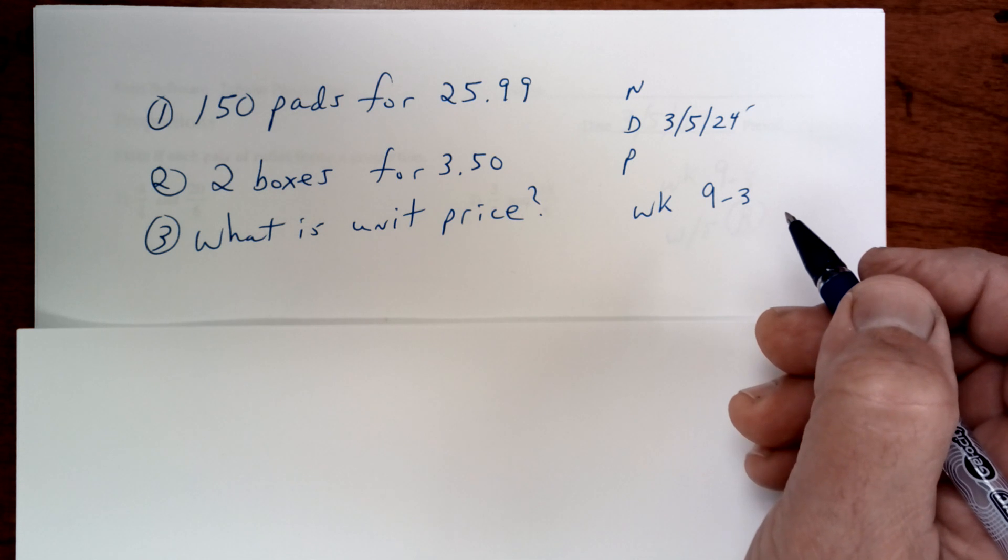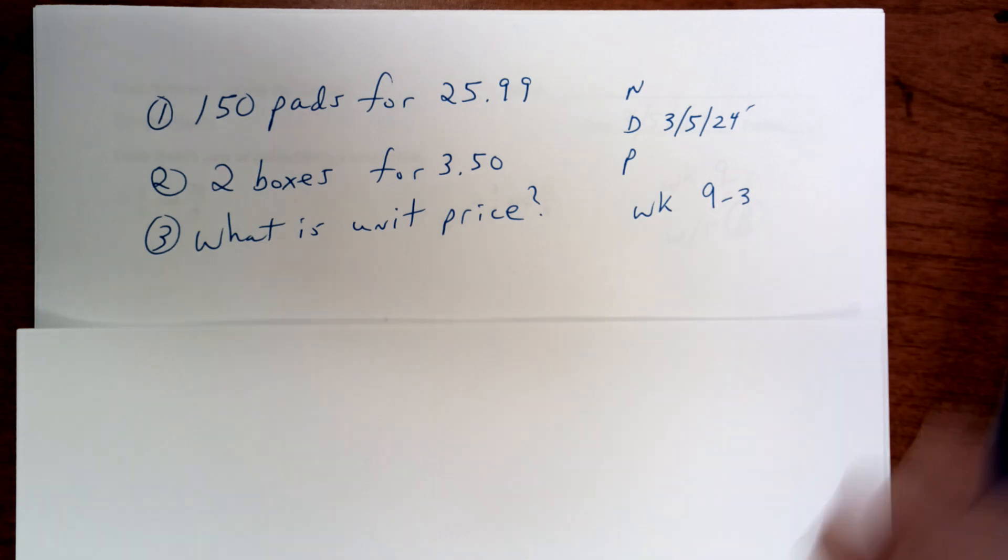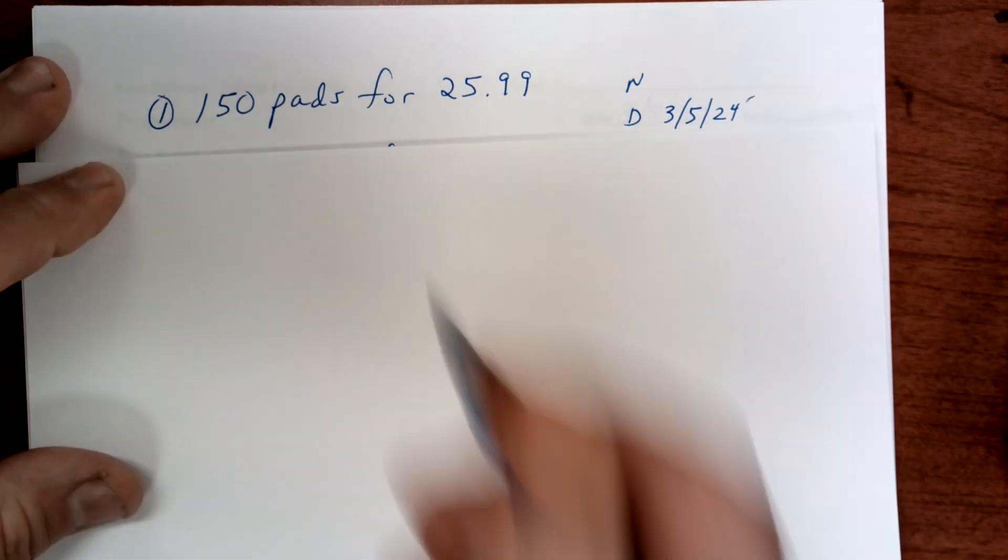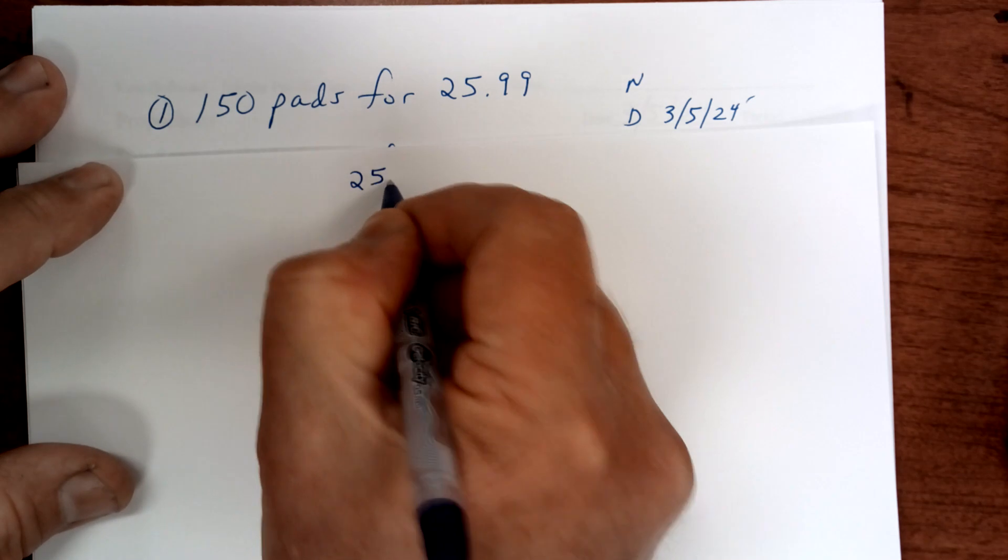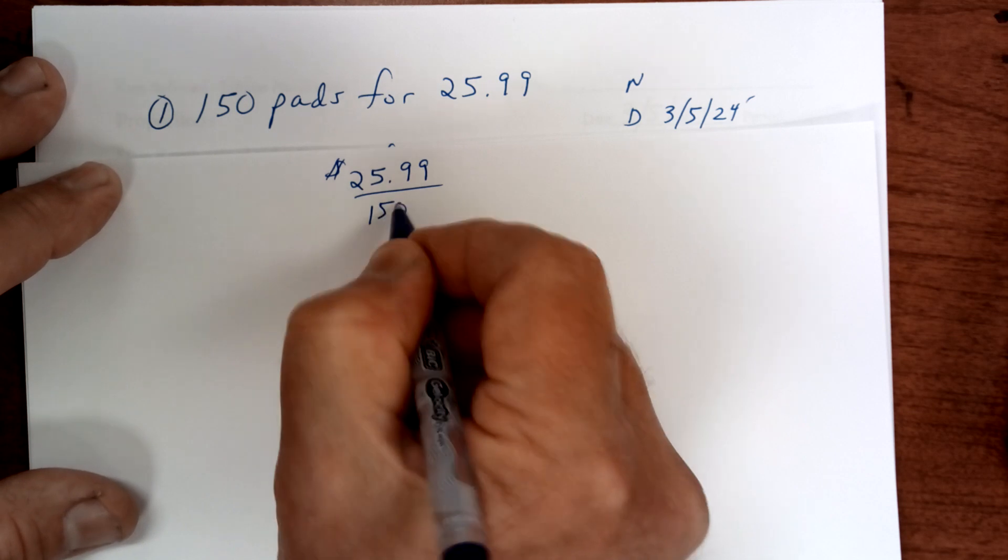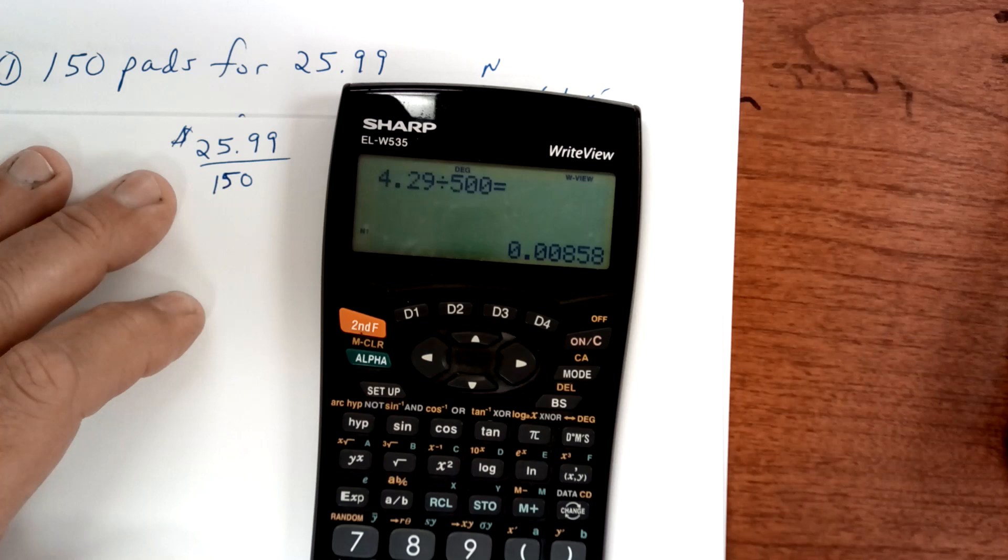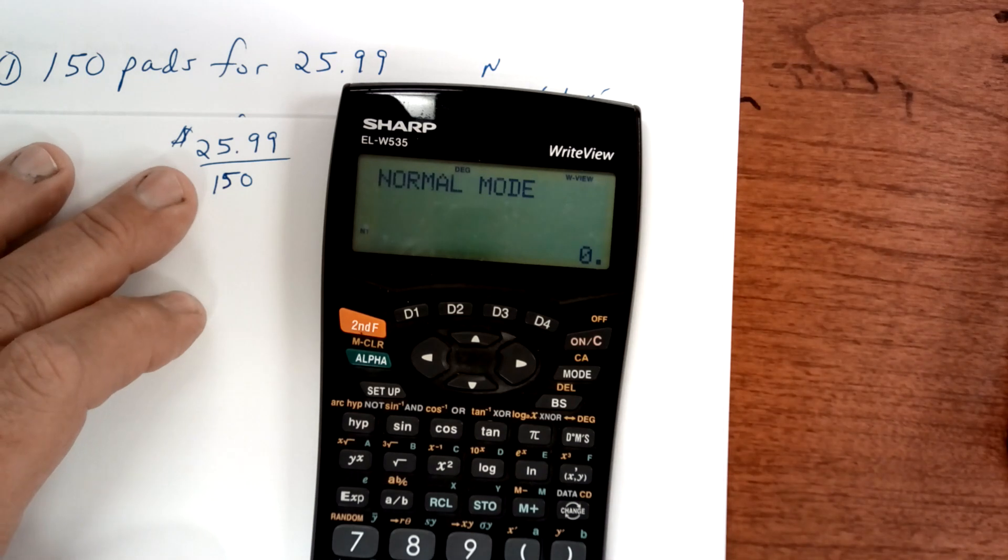Remember, money goes on top, so you're going to put the money on top and then get your calculator and divide. So $25.99 divided by 150.